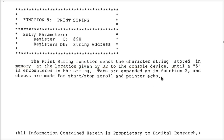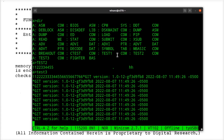Tabs are expanded as we saw before, and checks are made for start/stop scroll and printer echo while outputting. Of course you'd want to be able to stop it if it was printing too fast — control S to pause it, control Q to resume. If you hit control P, it would echo all output to the printer while printing it on the screen.